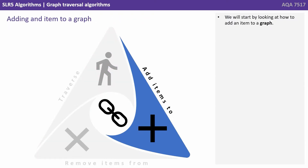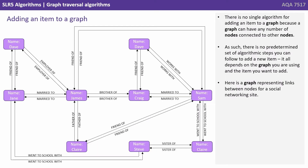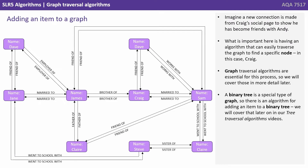We will start by looking at how to add an item to a graph. There is no single algorithm for adding an item to a graph because a graph can have any number of nodes connected to other nodes. As such, there is no predetermined set of algorithmic steps you can follow to add a new item. It all depends on the graph you're using and the item you want to add. Here's a graph representing links between nodes for a social networking site. Imagine a new connection is made from Craig's social page to show he becomes friends with Andy. What is important here is having an algorithm that can easily traverse the graph to find a specific node — in this case Craig. Graph traversal algorithms are essential for this process, so we will cover those in more detail later.